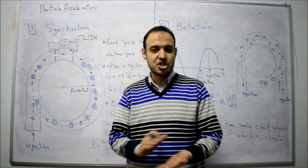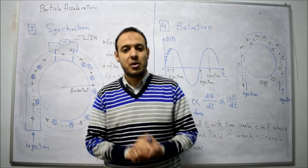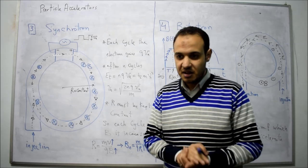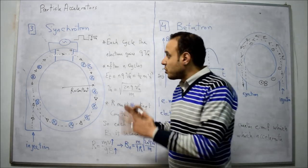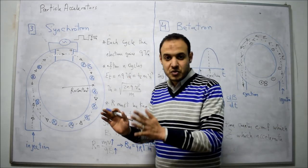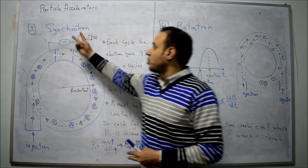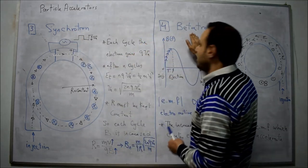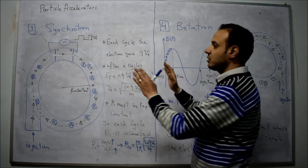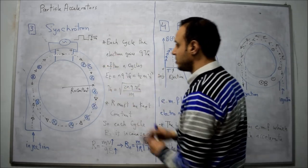In this lecture, we'll continue our study of particle accelerators. We'll study another two types of accelerators: the synchrotron and the betatron. Let's start with the most famous accelerator, the synchrotron.